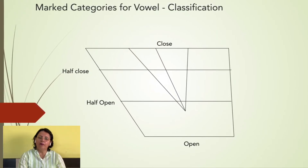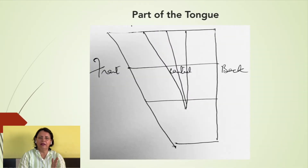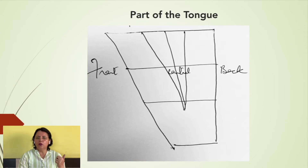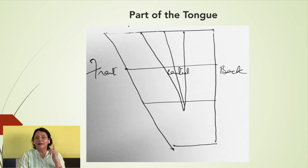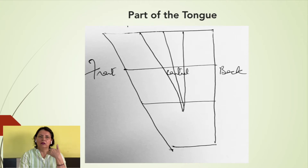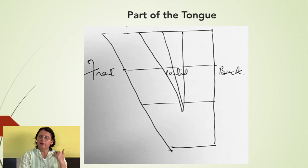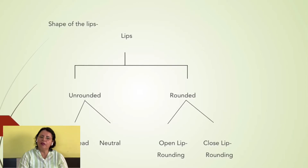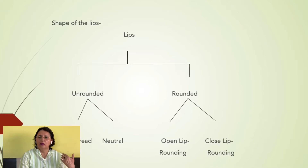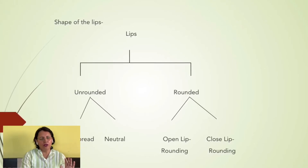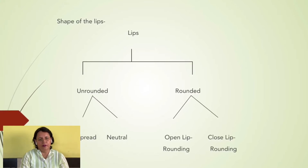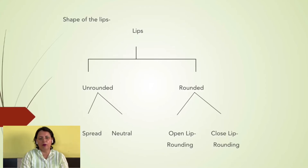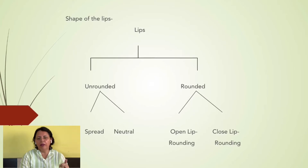Coming to the next classification, you have part of the tongue. Those articulated by the front of the tongue are called front vowels. Those articulated by the body of the tongue are called central vowels. And those articulated by the back part of the tongue — the part parallel to your soft palate, also called the velum — give you back vowels. So you have front, central, and back. Coming to the shape of the lips, the lips may be rounded or unrounded. When unrounded, you have spread vowels or neutral vowels. When rounded, you have open lip rounding and closed lip rounding.